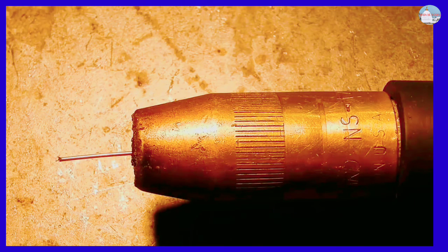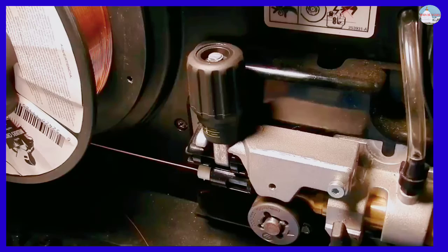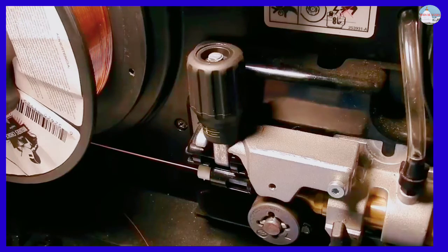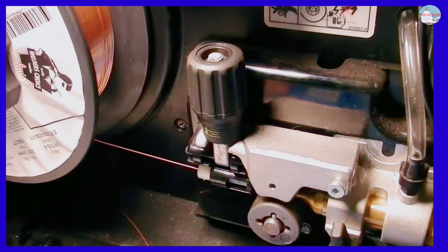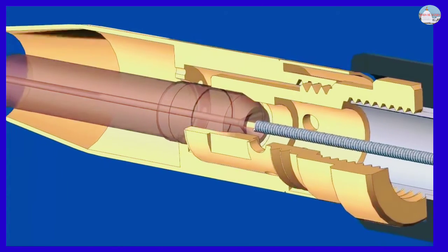In MIG welding, a thin wire acts as the electrode. This wire is fed from a spool mounted on a gun or inside the welding machine through a flexible tube and out of the nozzle on the welding gun or torch.